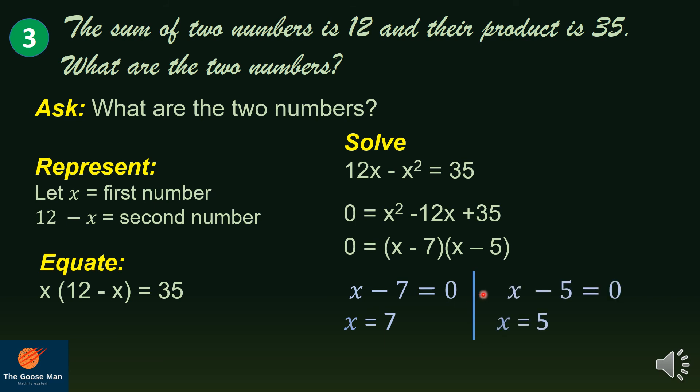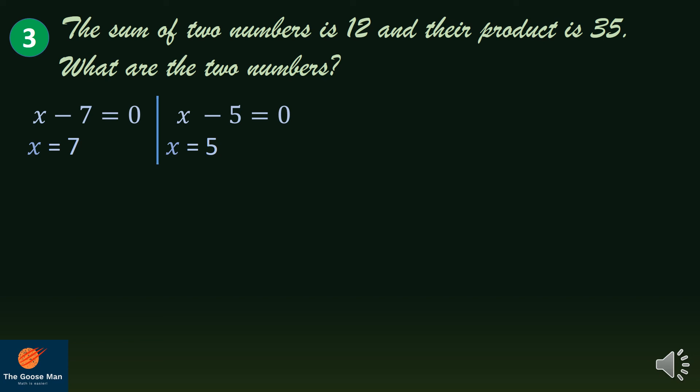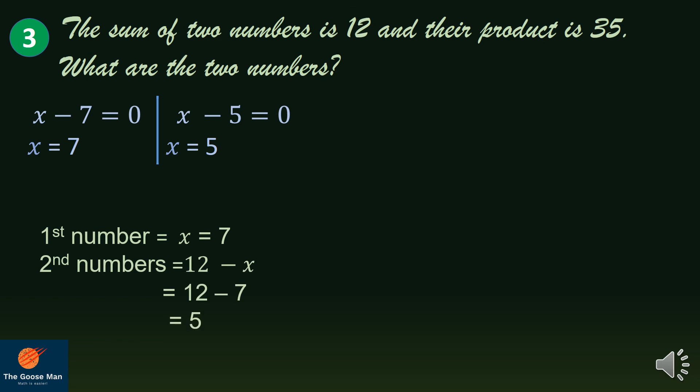On the other hand, x minus 5 equals 0, so adding 5 to both sides gives x equals 5. We found that x equals 7 and x equals 5. Since we are looking for two numbers, both roots are accepted. So the first number equals 7 while the second number is 12 minus x equals 5. Checking: 7 plus 5 — is it equal to 12? Yes, 12 equals 12.